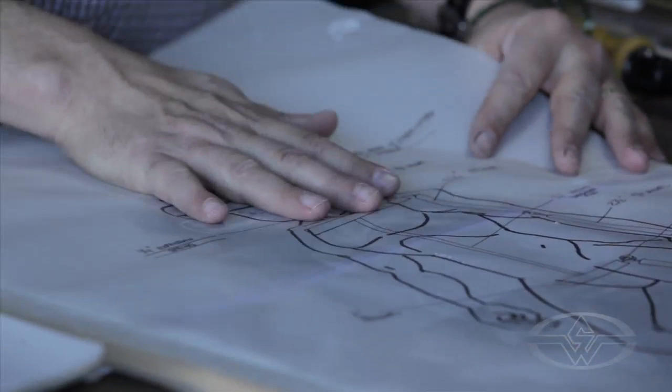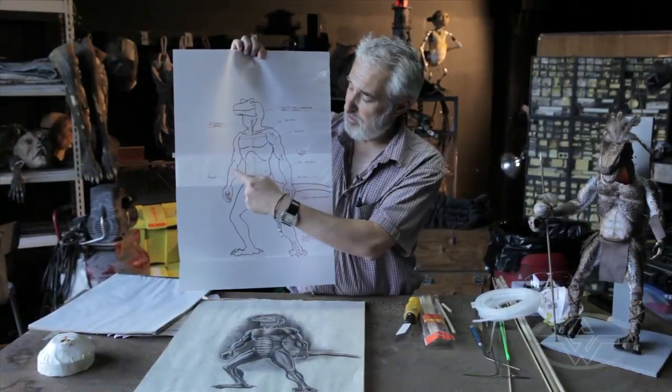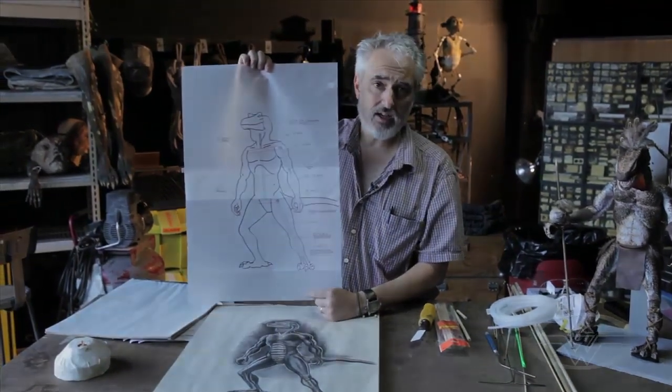It's good to take a piece of tracing paper and put it over your drawing to build a blueprint like this. This will help you design the armature that's going to go inside of your puppet.